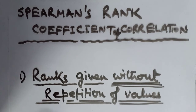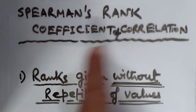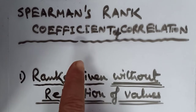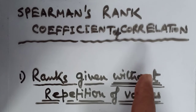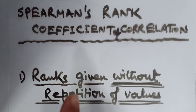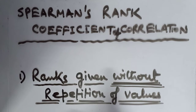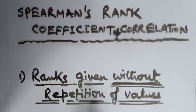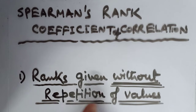Now, in determining Spearman's rank correlation coefficient, there are two cases. The first is where ranks are given when there is no repetition of values — that is, ranks given without any repetition of the values.